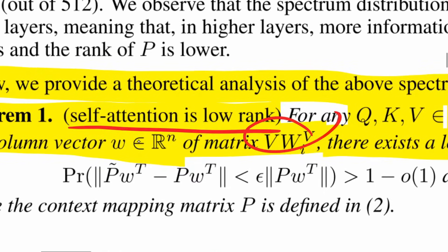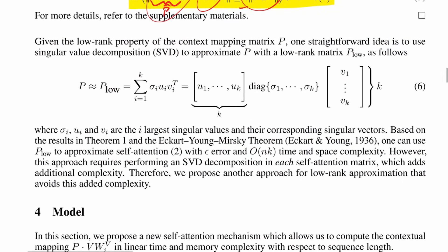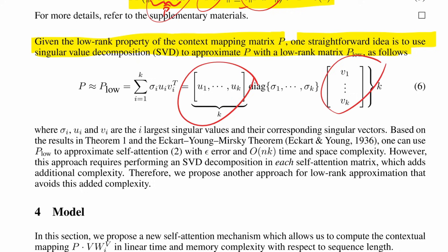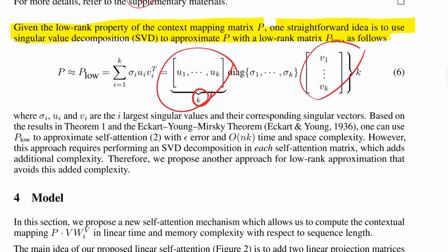So I disagree that low rank has been shown theoretically — only empirically. One straightforward idea would be to use SVD to approximate P with a low-rank matrix, decomposing it and computing cheaper inner products in dimension k. However, this approach requires performing an SVD decomposition for each self-attention matrix, which adds additional complexity. Therefore, they propose another approach for low-rank approximation that avoids this added complexity.